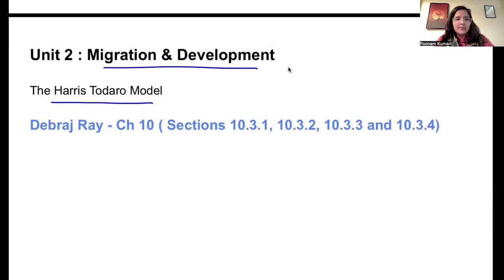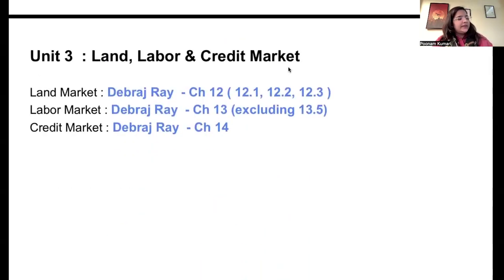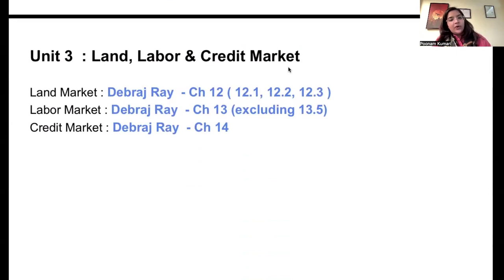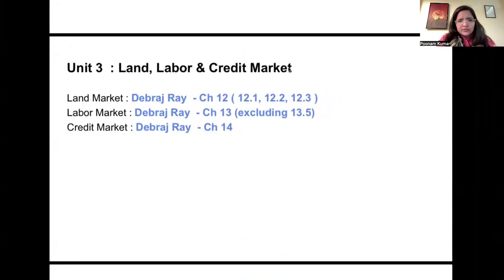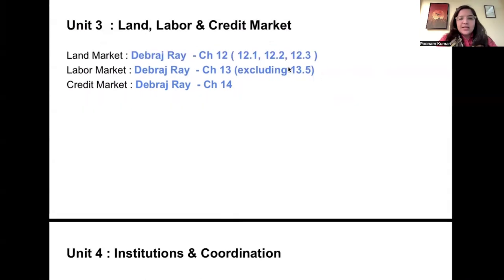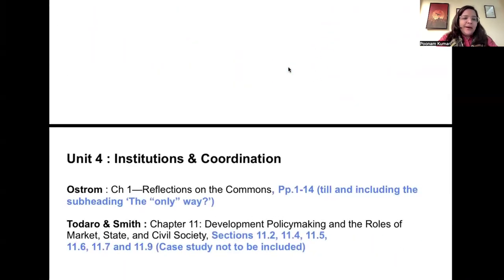And then unit number three will be based on discussion on land market, labor market and credit market. All of this will be from Debraj Ray book only. Chapter number 12, these three sections. Chapter number 13, exclude this. And chapter number 14. So first, second, third unit, everything is going to be from Debraj Ray book. And the syllabus seems to be manageable. It's not very vast as it was the case in the previous semester. So this is not the situation. Readings limited.